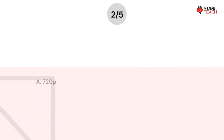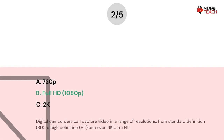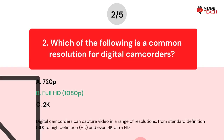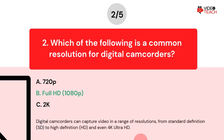The correct answer is Option B. Digital camcorders can capture video in a range of resolutions from standard definition SD to high definition HD and even 4K Ultra HD.